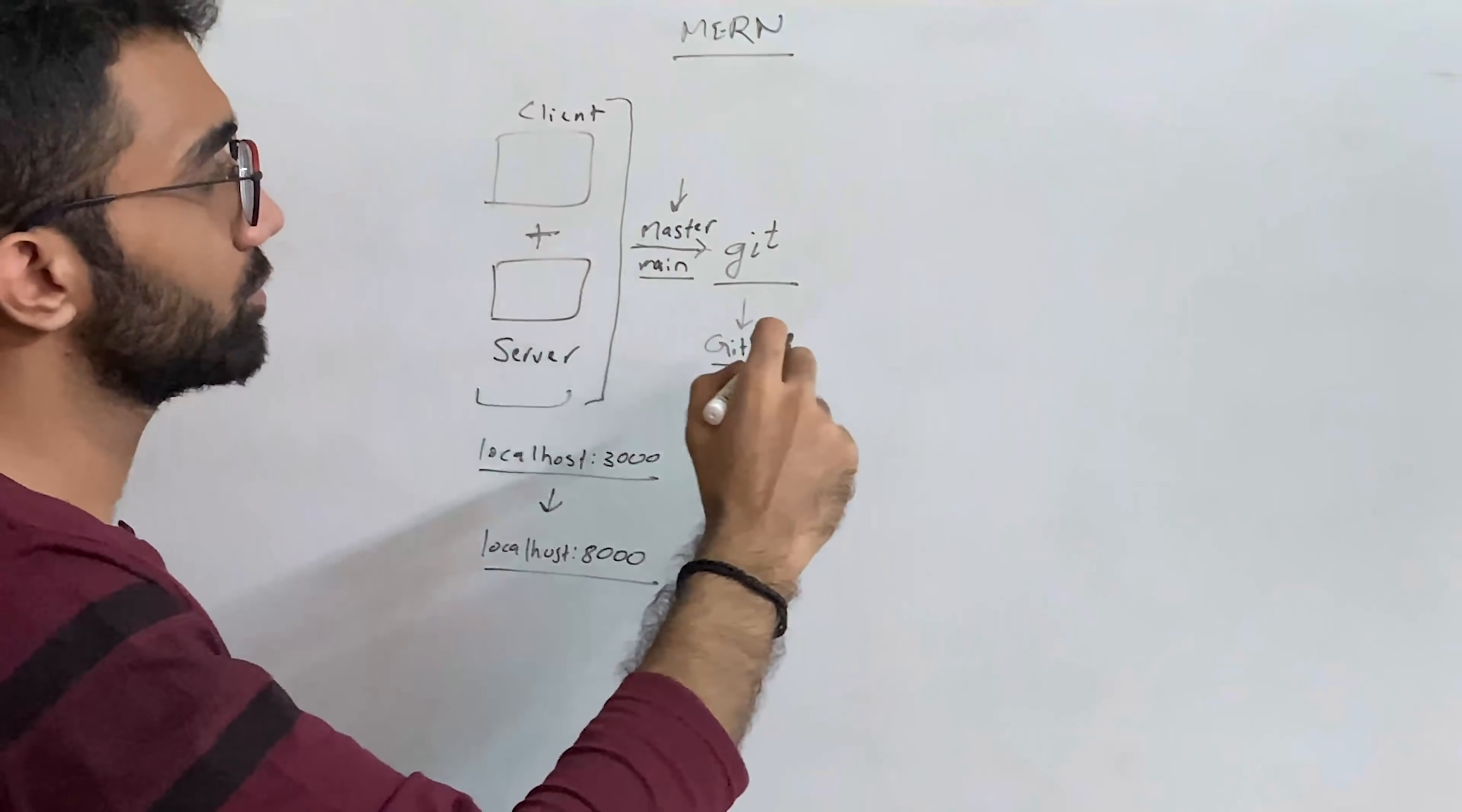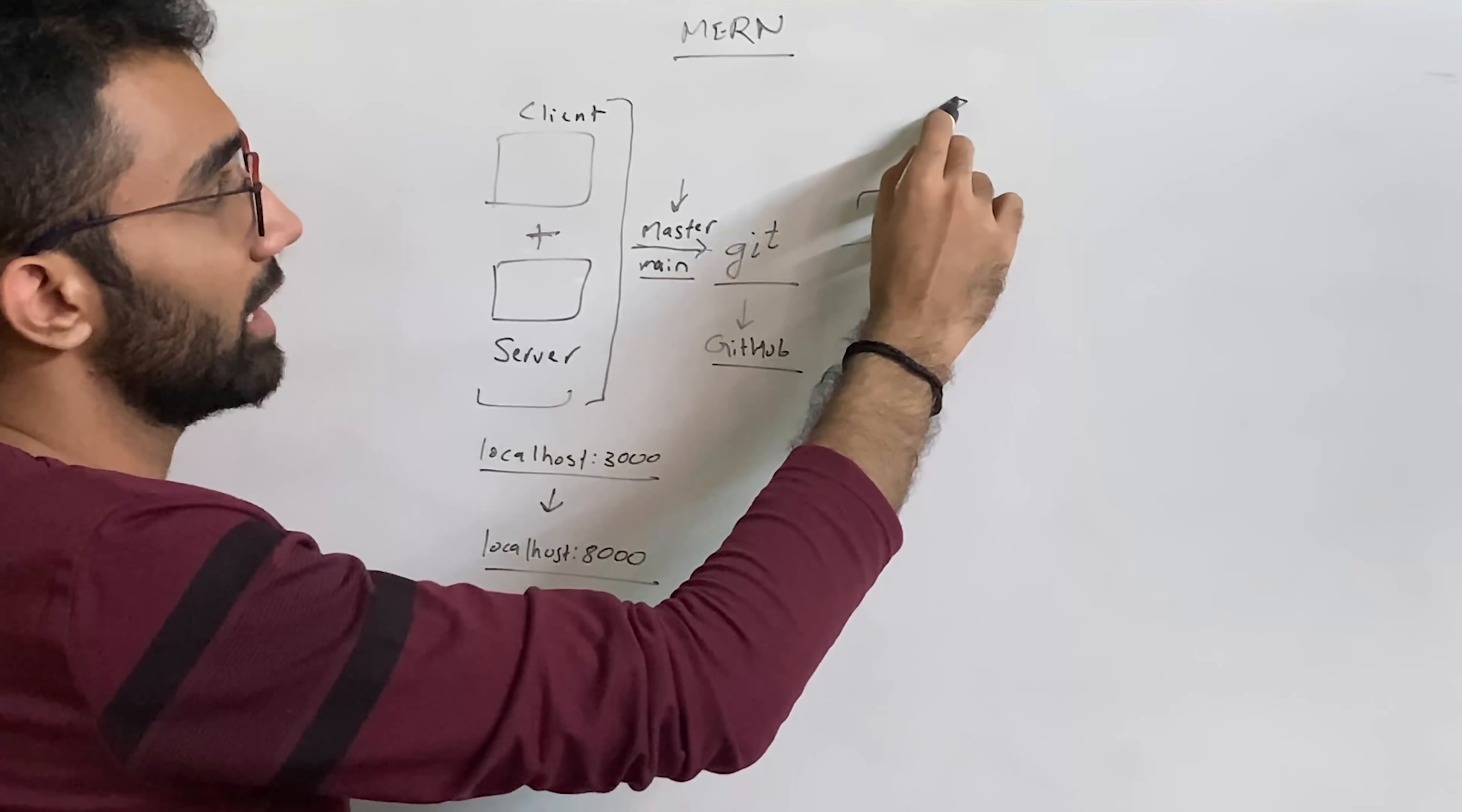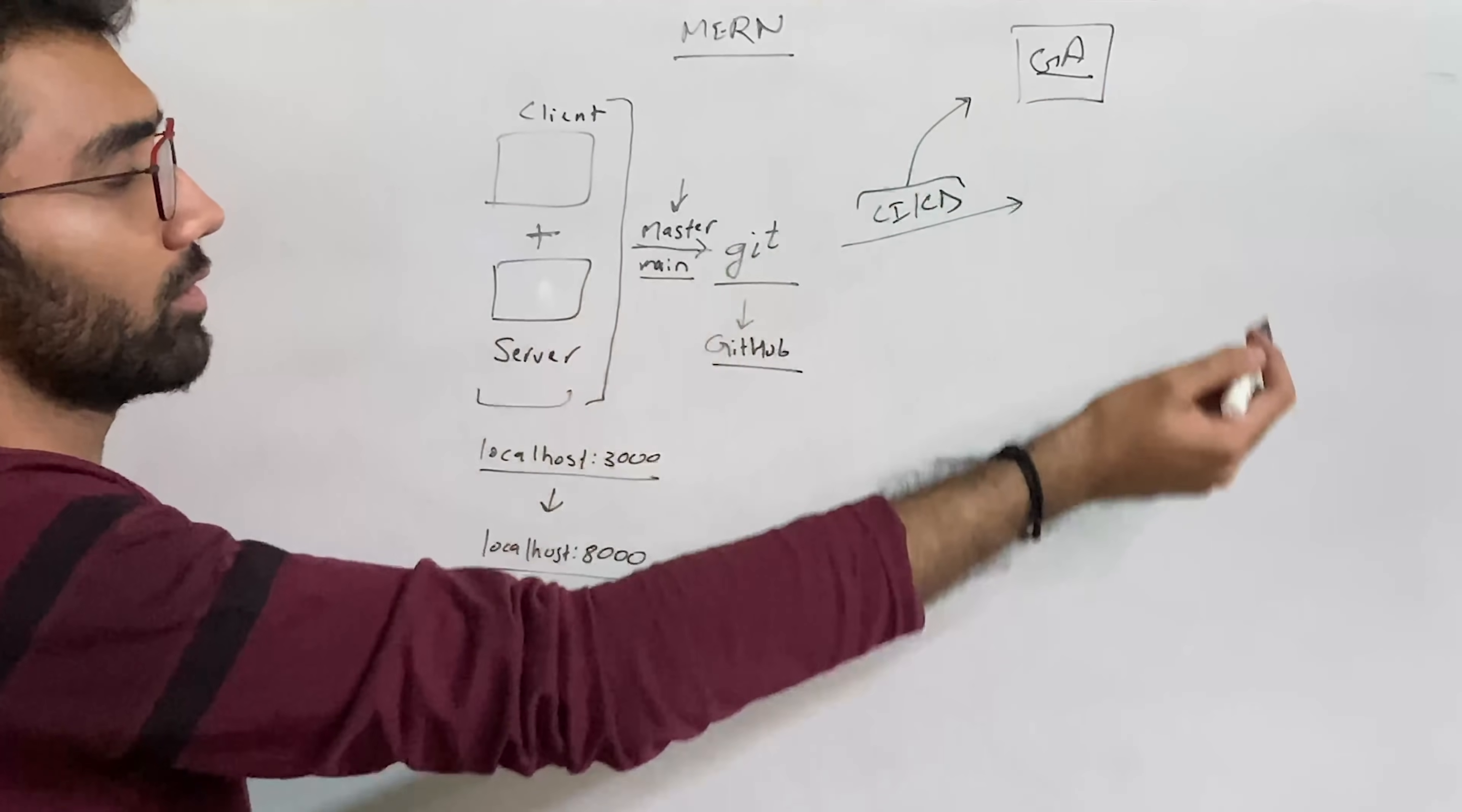Now how does that happen? That happens because there is a process known as CI/CD, continuous integration and continuous deployment. Now CI/CD, these are nothing but actually cloud computers. For example, for GitHub we have something known as GitHub Actions. So these are cloud computers which build your code in production mode and also deploy it on the server.